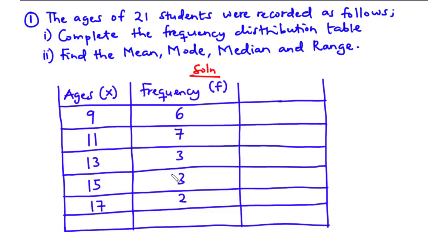Now to complete this table, first of all let's find the summation of f. The summation of f means we are going to sum up all the frequency values. So 6 plus 7 is 13, 13 plus 3 is 16, 16 plus 3 is 19, and 19 plus 2 is 21. So the summation of f is 21.